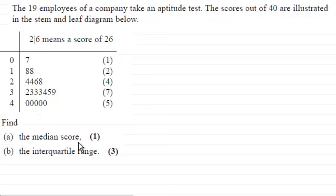And we've got to find the median score for one mark and in part B the interquartile range for three marks.